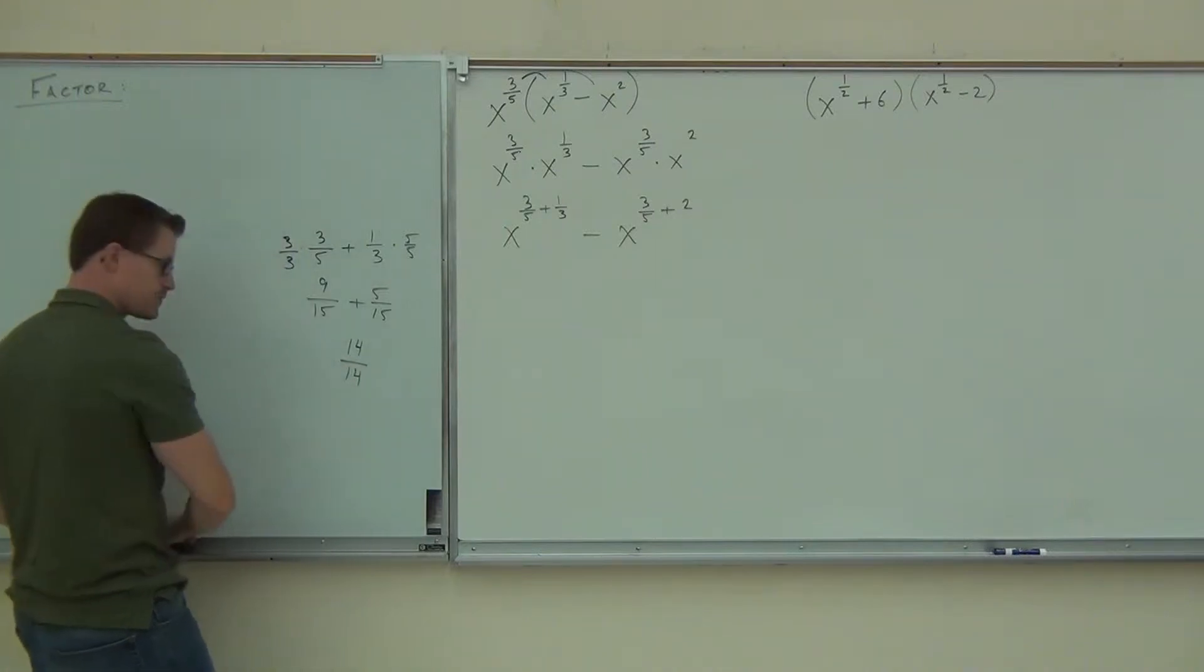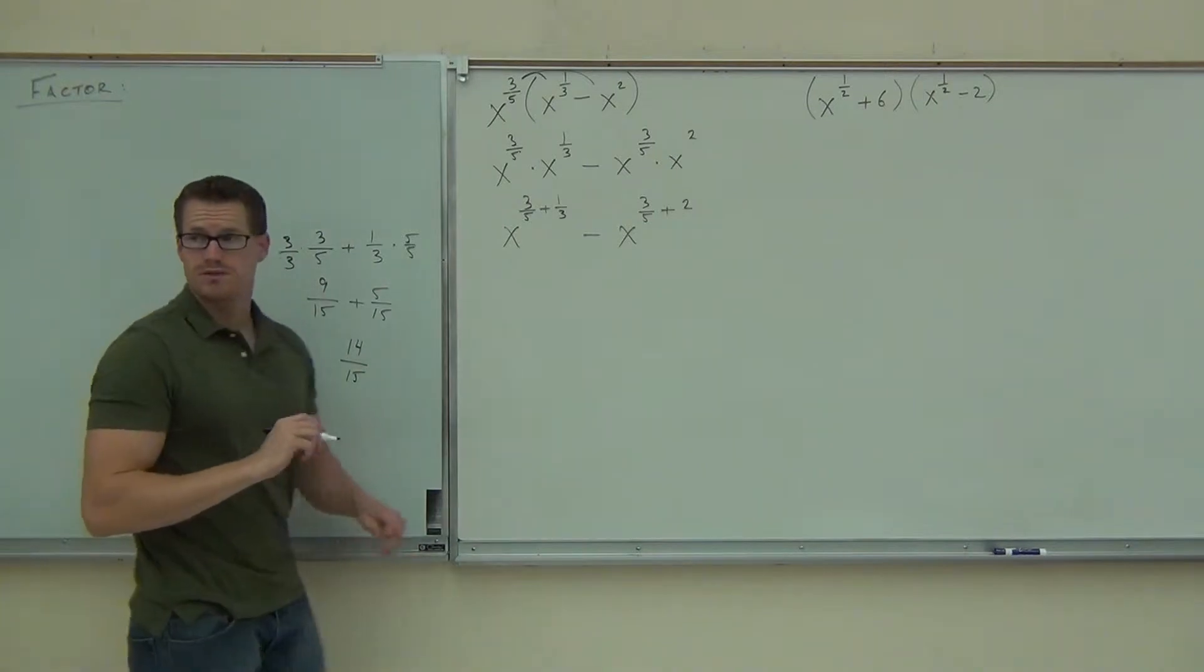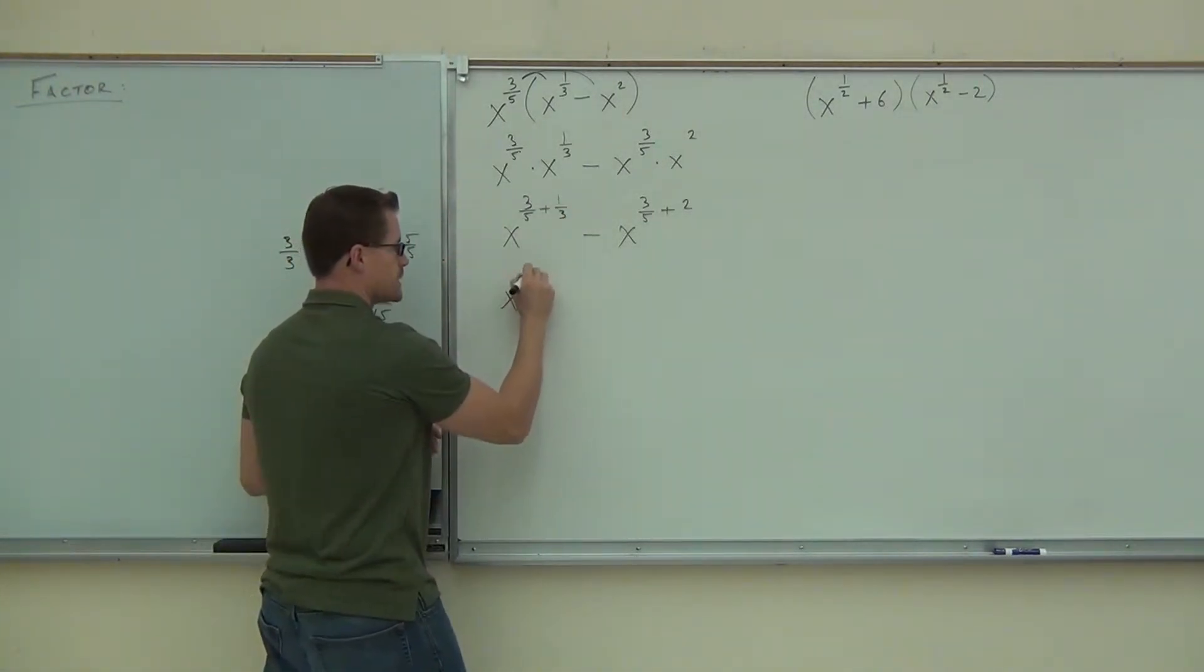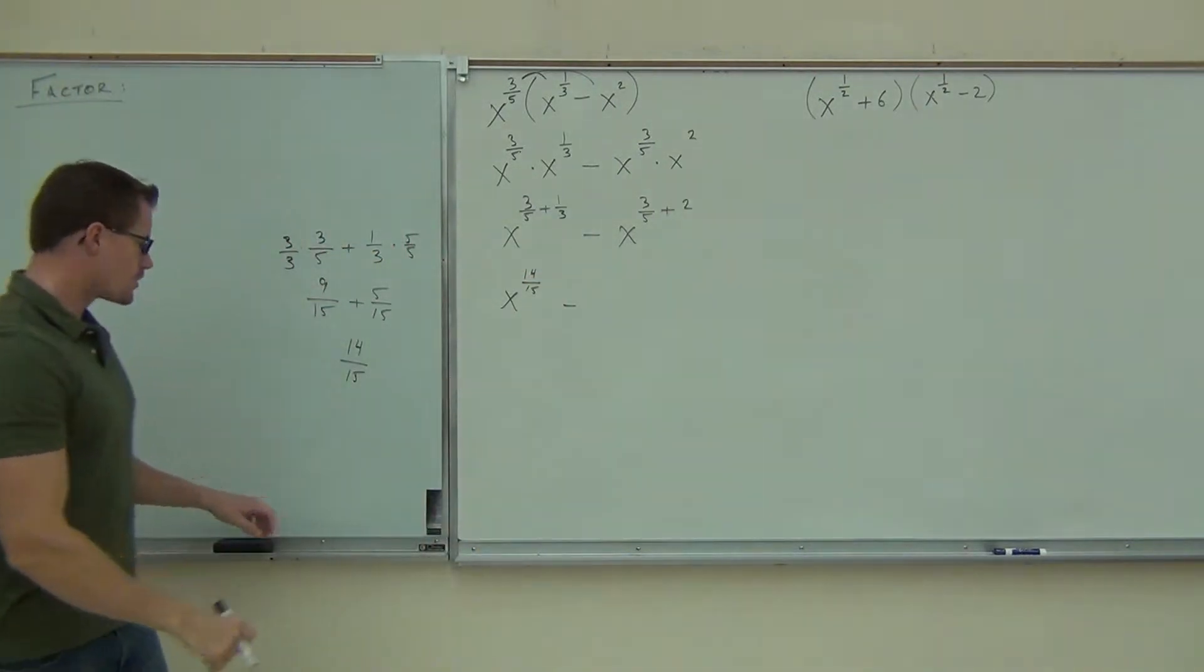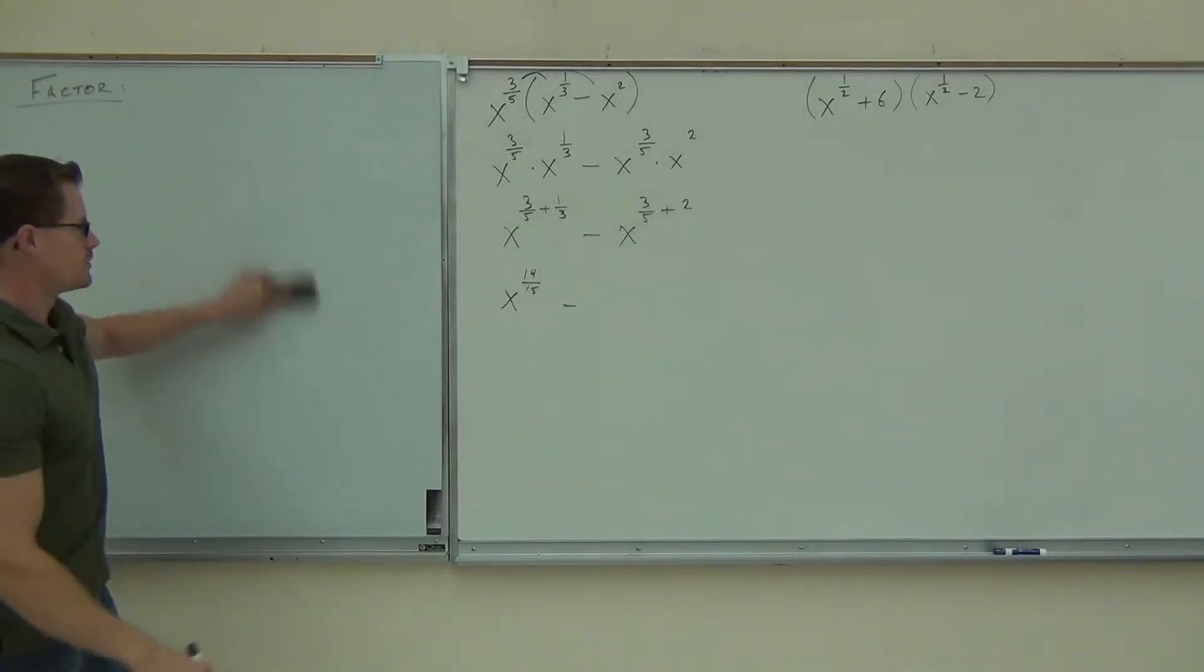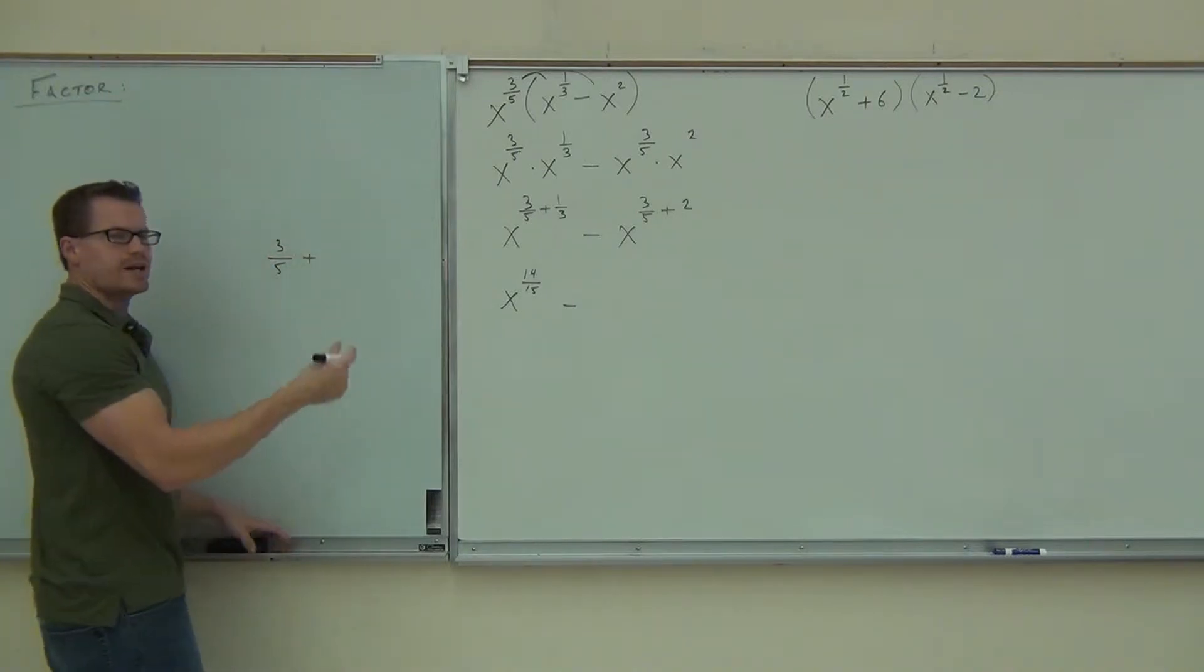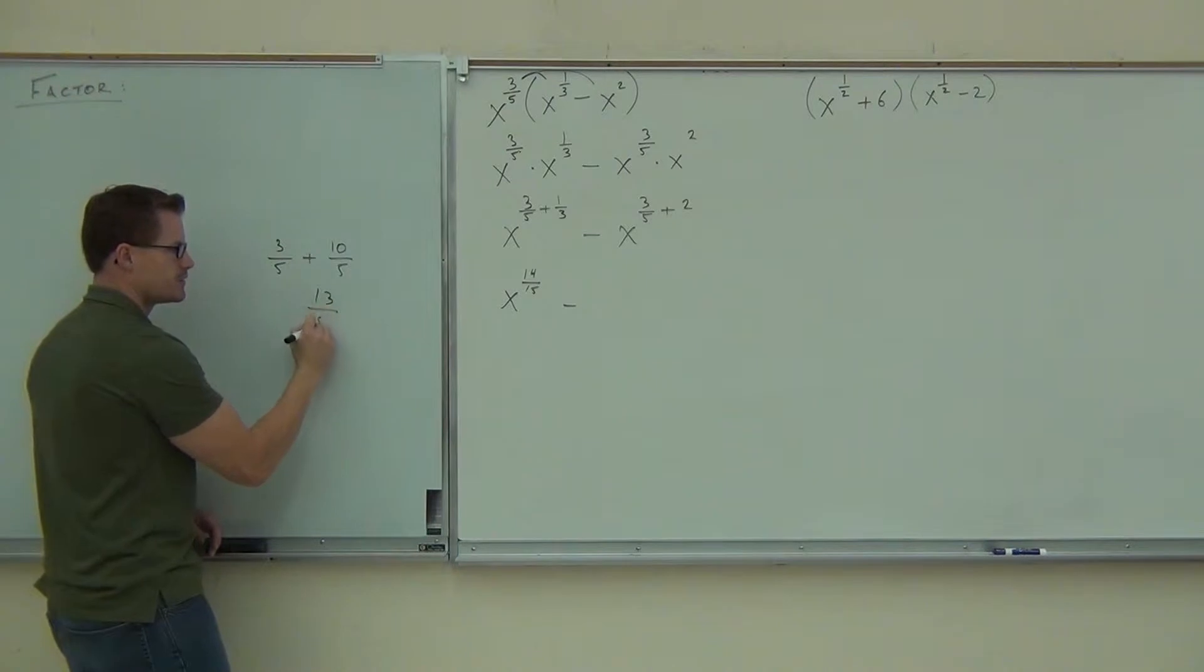So I'm getting 14 fifteenths. Did you get 14 fifteenths as well? So our first expression is x to the 14 fifteenths, that's our first term. Minus, we're also going to do the three-fifths plus two. I'll erase my scratch paper here. Three-fifths plus two, I know that two is ten-fifths, so I'm going to get 13 fifths.